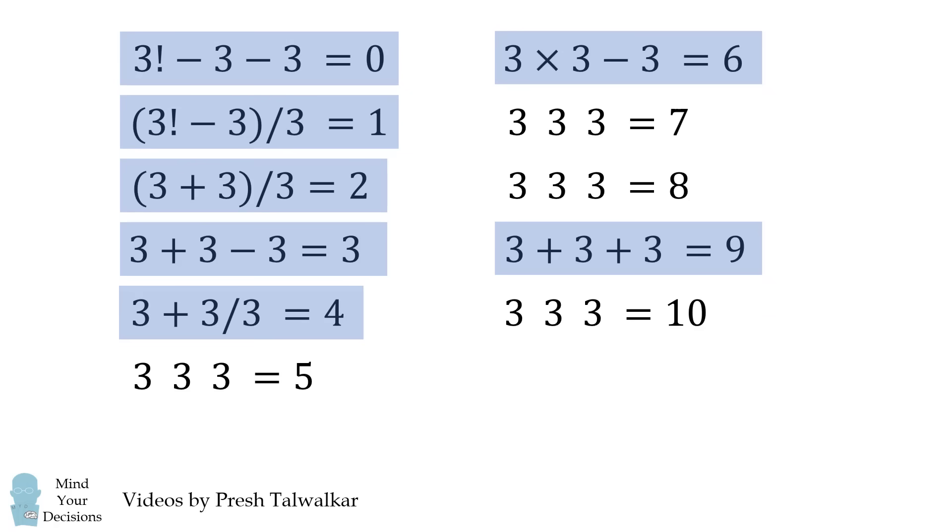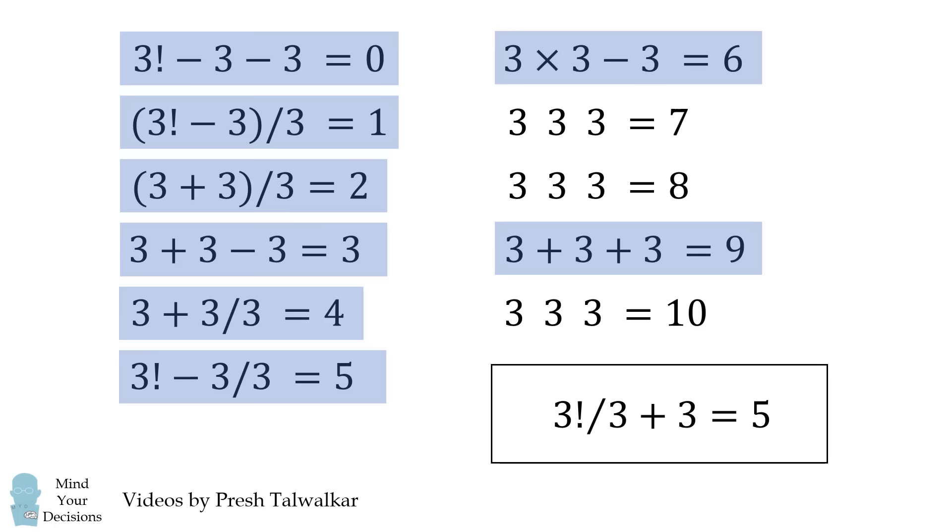To get to 0, we'll do 3 factorial minus 3 minus 3. To get to 5, we'll do 3 factorial minus 3 over 3. We could also do 3 factorial over 3 plus 3 to get to 5.